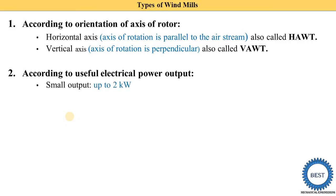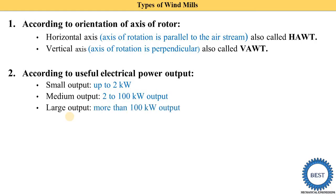The first is small output, which means up to 2 kilowatts — for example, 1 kW, 1.5 kW, or 1.9 kW. The second is medium output, which ranges from 2 to 100 kilowatts. The last is large output, meaning the windmill produces more than 100 kilowatts of power.